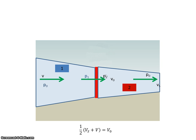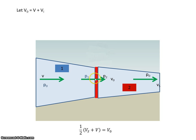In the last video on propeller analysis, we concluded by saying that the velocity through the disk was the average between the slipstream velocity and the freestream velocity. So let's say that the velocity of the disk going through here, V0, is equal to the freestream velocity V, plus some induced velocity VI, due to the presence of the propeller blade. That's what happens as the air goes through the propeller — the propeller is giving it some energy.